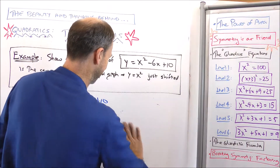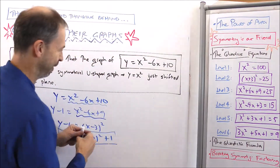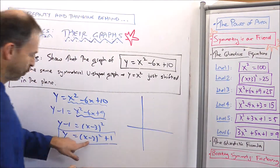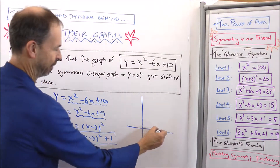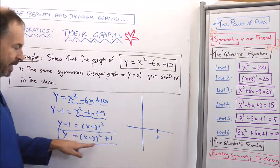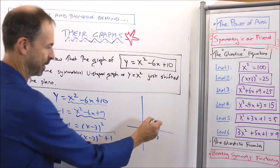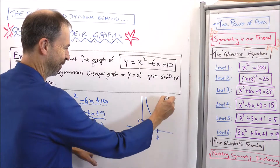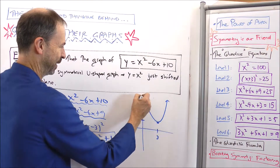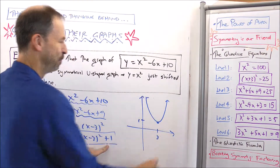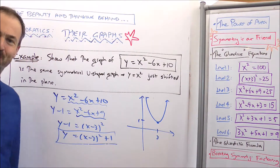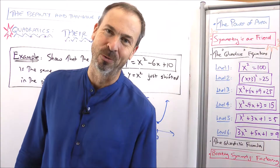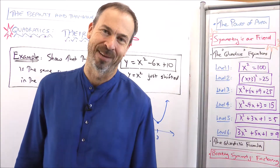I could quickly sketch that graph: 3 is behaving like 0, everything is up by 1, so it must be the y equals x squared graph sitting over there. We're getting that symmetrical u-shaped graph again.